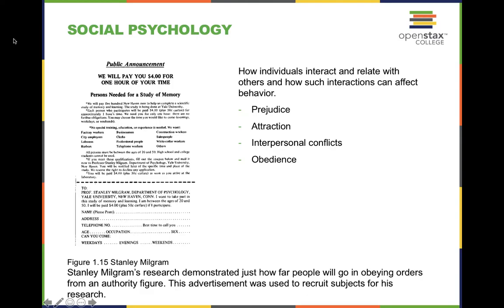Social psychology refers to looking at an individual and how they behave in a group setting. People often ask the difference between social psychology and sociology. Social psychology still focuses on the individual, but in a group setting. Sociology is more so looking at group behavior as a whole and group dynamics. We're going to learn about some unethical studies that told us a lot about how we interact and are influenced by other people — things like obedience to authority or trying to fit in with a crowd.